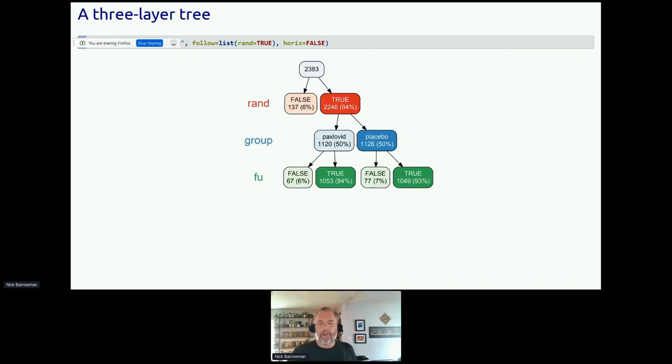Now let's go to a three-layer tree where we also include follow-up. And follow-up, now we can see what happened or how many of the patients who received Paxlovid were followed up or not. The ones who weren't followed up discontinued for various reasons. Now this already gives us a good deal of what's going on in the CONSORT diagram. But to actually get into the reasons for exclusions and so forth, we're going to need another tool in vtree.